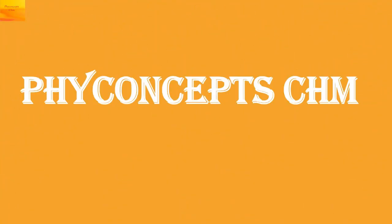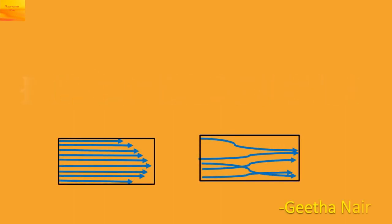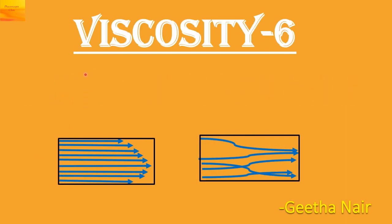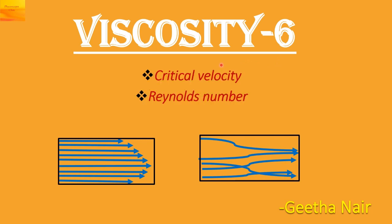Welcome to my channel Phi Concepts CHM. This is the sixth part in the series on viscosity, where we will see about the critical velocity and the Reynolds number.